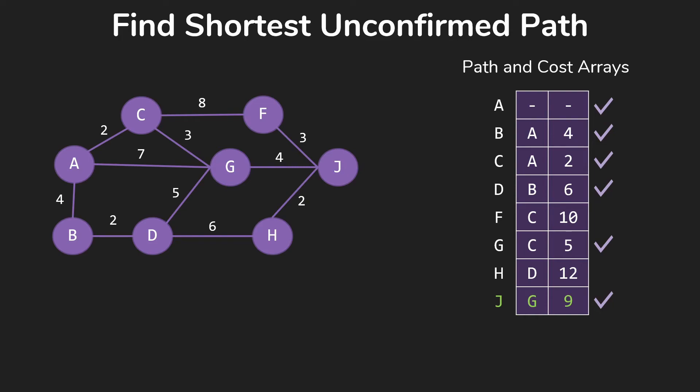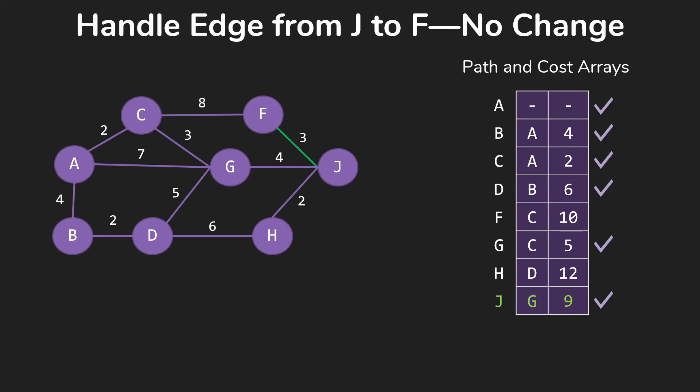We now go through our array and discover that the shortest path we have available is the path to J from G for 9. So now we start checking the edges for J. Now with F, 9 plus 3 is 12, we currently can get to F for 10, so we don't change what we have in the array.